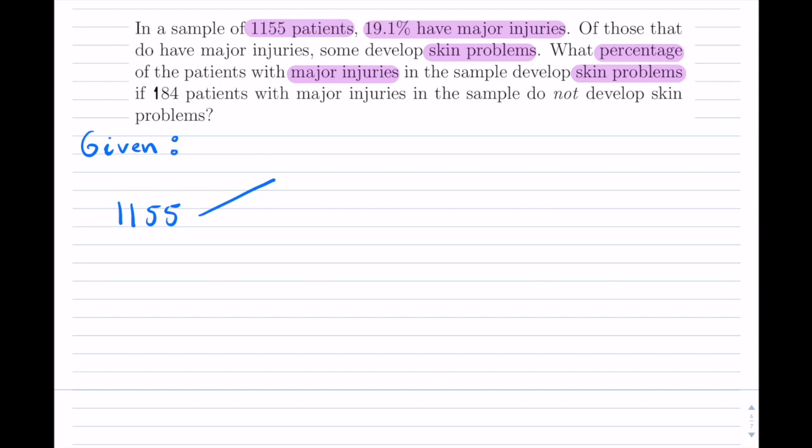Now they tell me, out of those, that we have 19.1%, and 19.1% as a decimal is 0.191. So these ones have these major injuries. And now on the opposite branch, I will have 100%, so I will have the remainder, which is 100%, so that's 1 as a decimal, minus the 19.1%. And those ones do not have major injuries. So those are my two branches from the beginning.